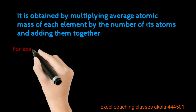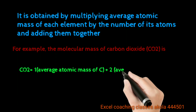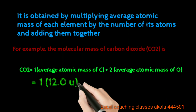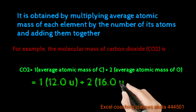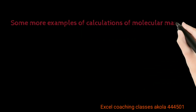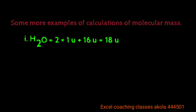The molecular mass is obtained by multiplying the average atomic mass of each element by the number of its atoms and adding them together. For carbon dioxide (CO2): carbon mass is 12, oxygen mass is 16, and there are 2 oxygen atoms. So: carbon average mass 12.0, plus oxygen quantity 2 × 16 = 32. That gives the total molecular mass of CO2. Similarly for H2O: hydrogen and oxygen are calculated in the same way.